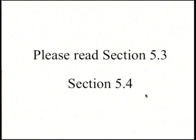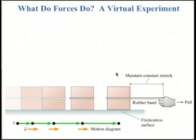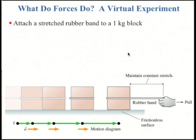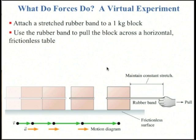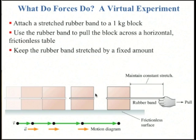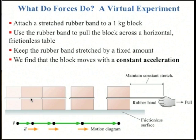Section 5.4: What do forces do? Imagine we have a block sitting on a frictionless surface, and we attach a rubber band to it and stretch the rubber band by some fixed amount. The block will begin to move slowly at first, and as we continue pulling while keeping the rubber band at the same length, it'll speed up faster and faster. It turns out that the acceleration of the block is constant as long as we maintain a constant stretch on the rubber band.